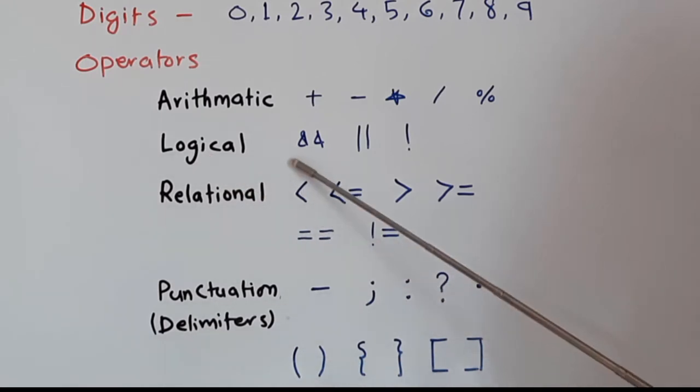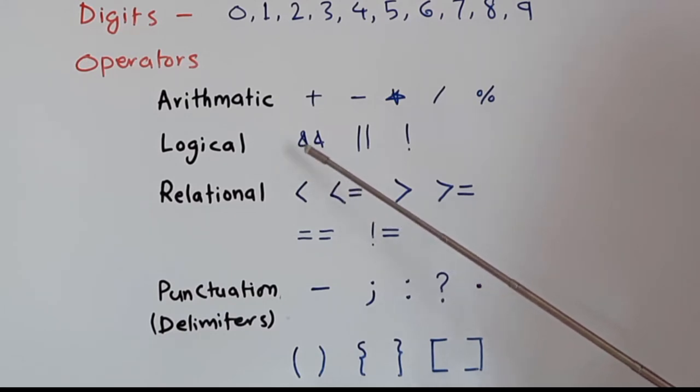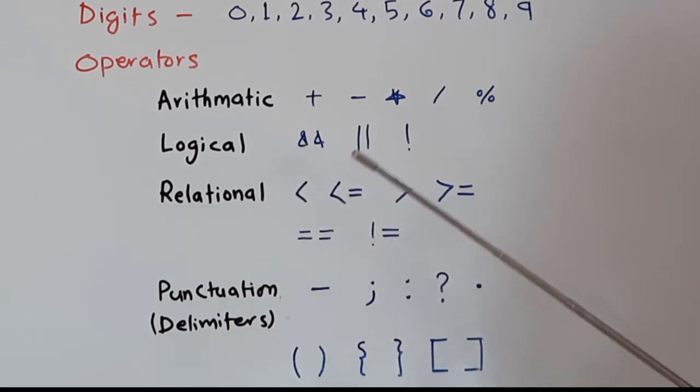Then we have logical operators. This is AND. If you type AND two times, it becomes a logical operator called AND. These are the straight lines or standing lines. If you print the standing line two times, it becomes OR operator. This is the exclamation mark, used as NOT operator. AND, OR, and NOT are the logical operators.